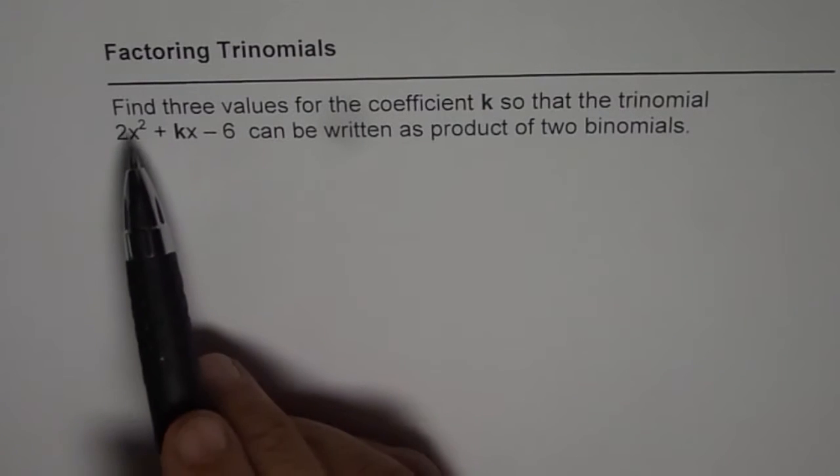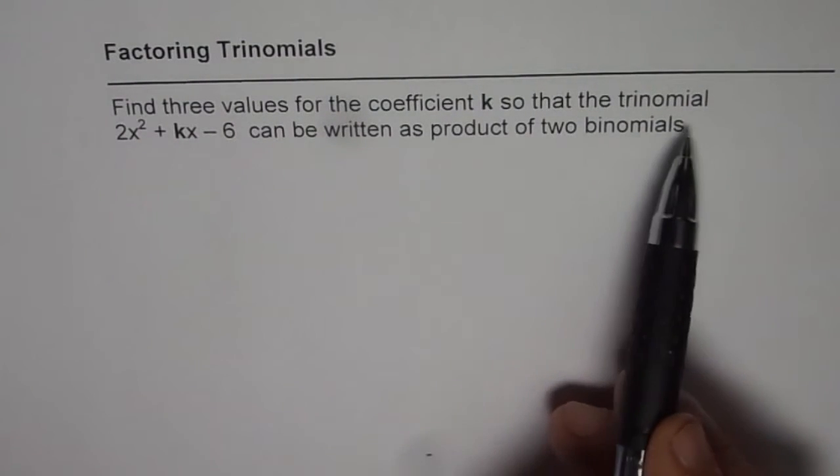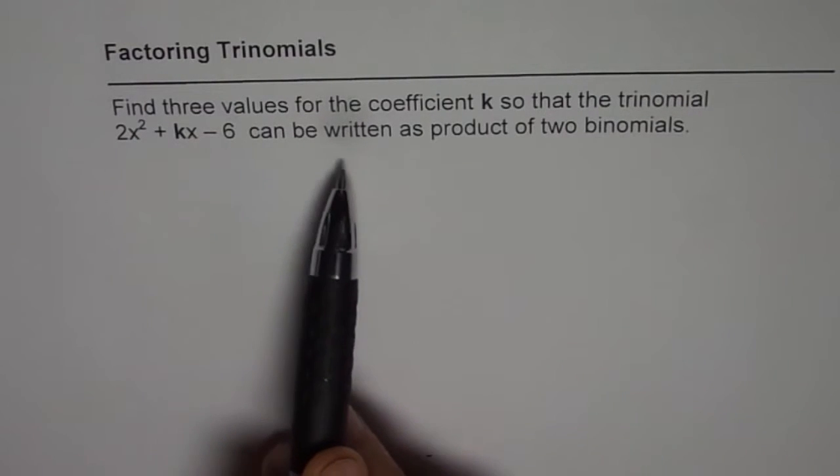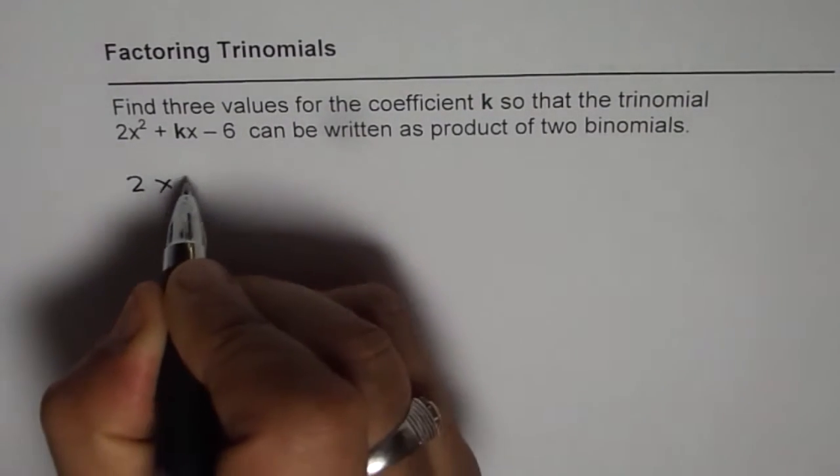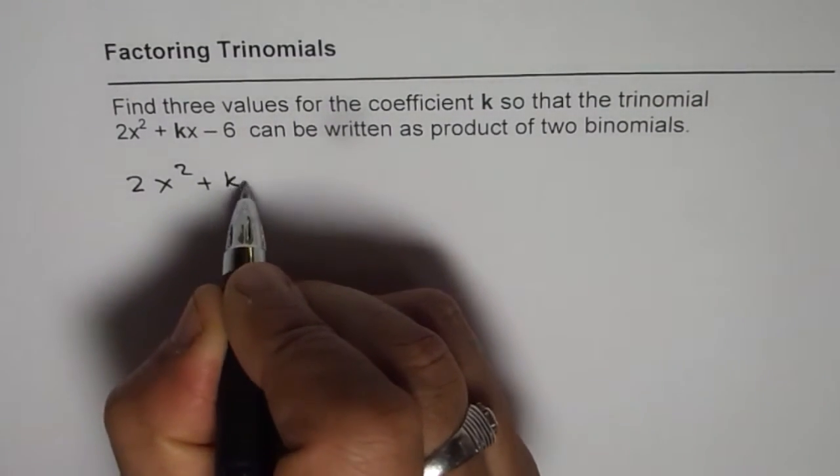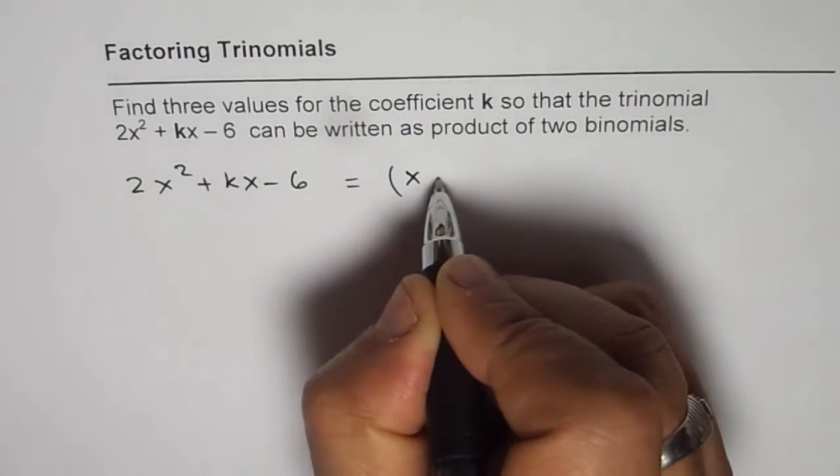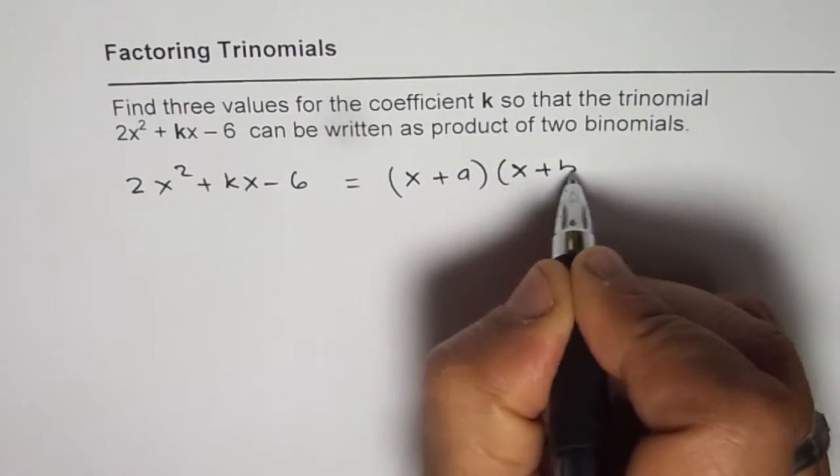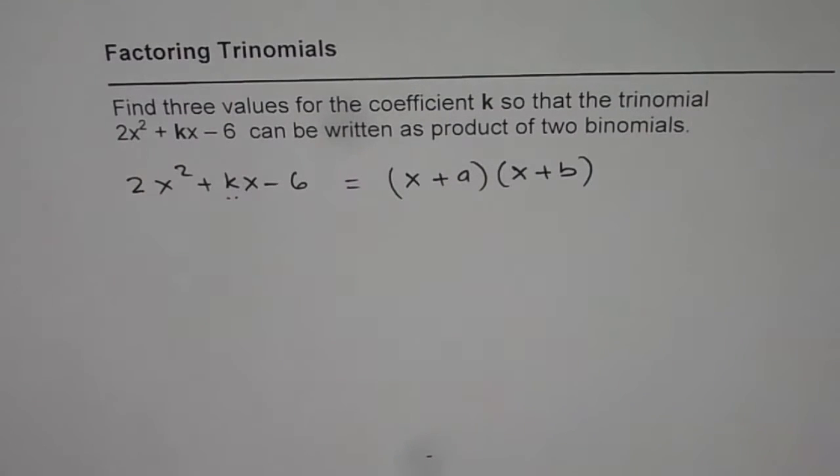The question here is find three values for the coefficient k so that the trinomial 2x² + kx - 6 can be written as product of two binomials. That is to say we need to write 2x² + kx - 6 as product of two binomials, that means (x + a)(x + b). So for that we need to find appropriate values of k. How can we do that?